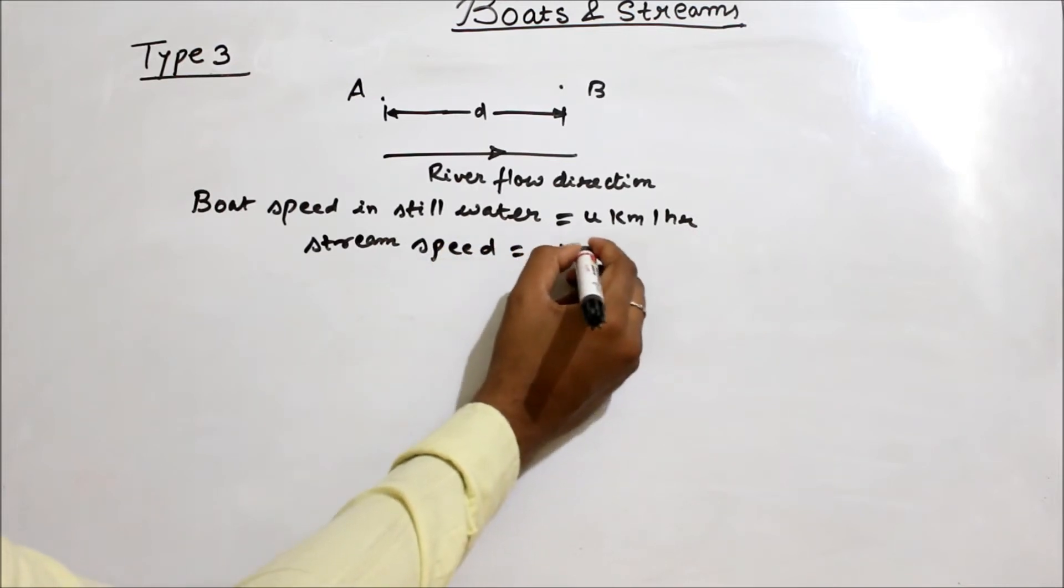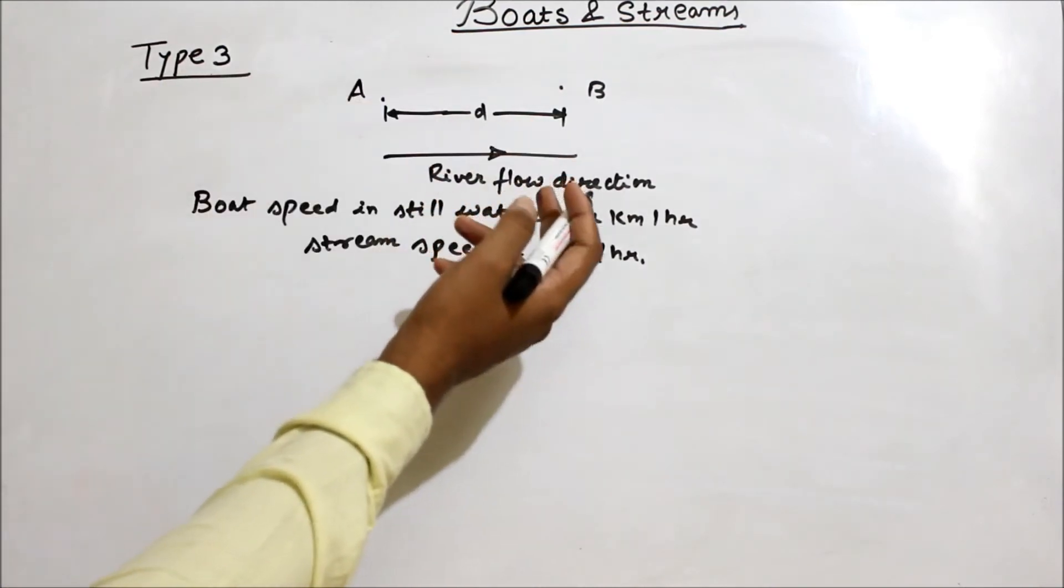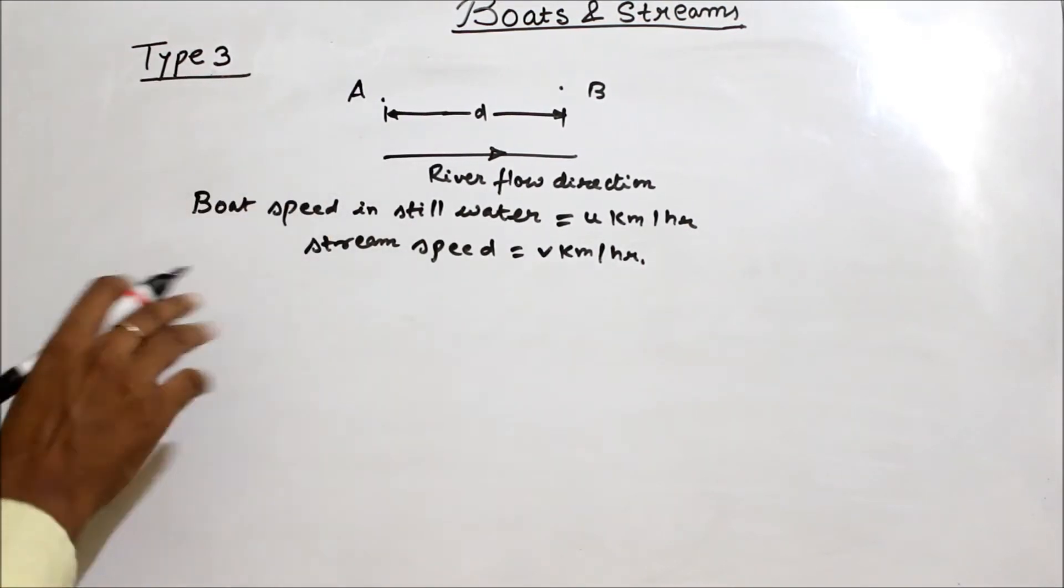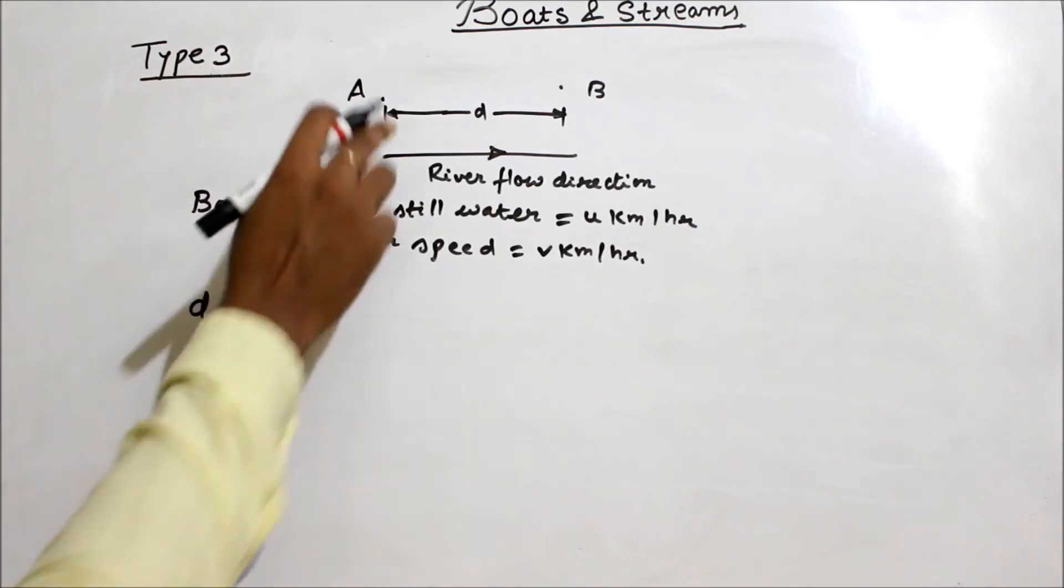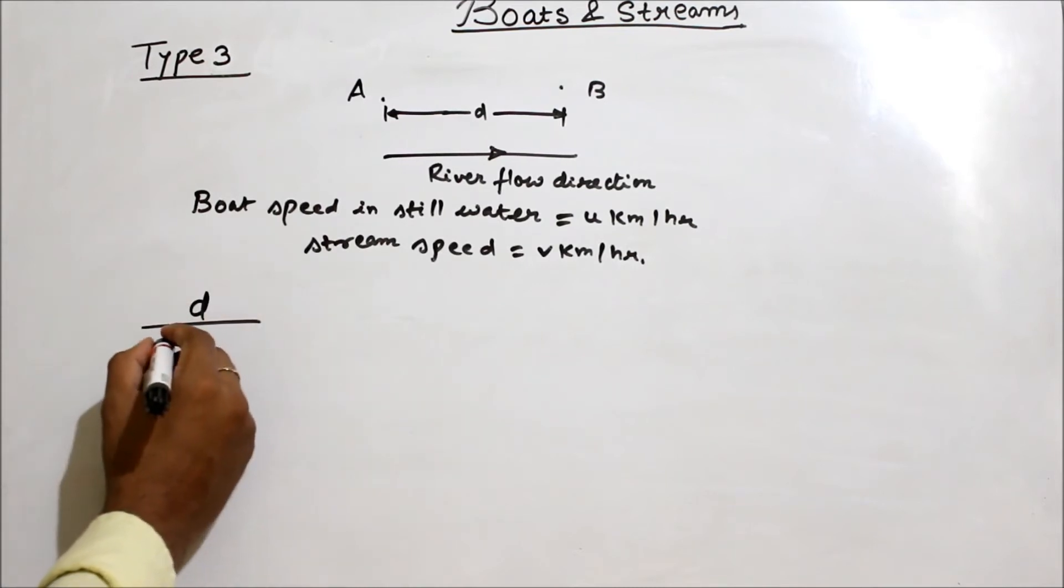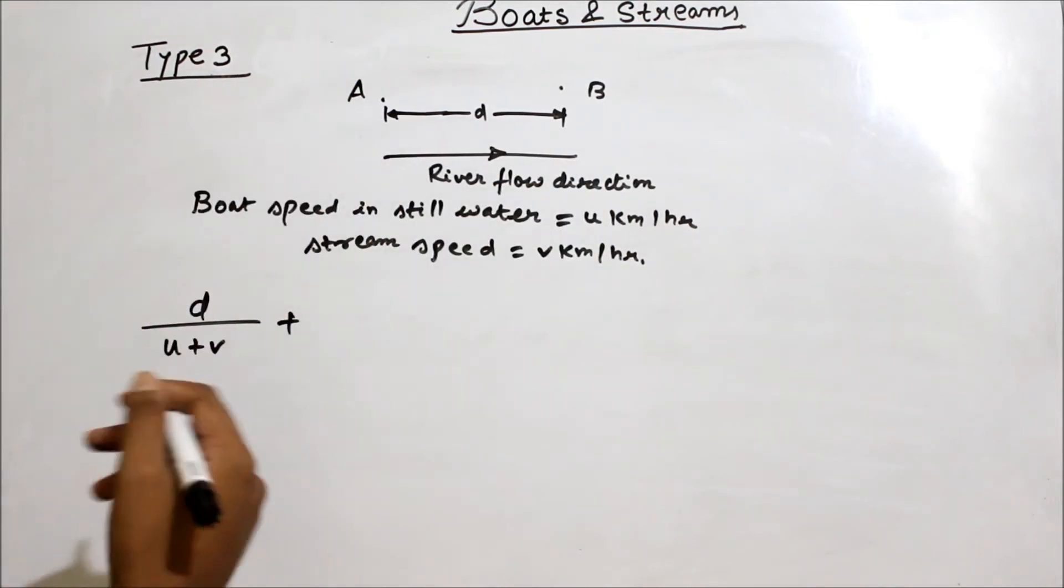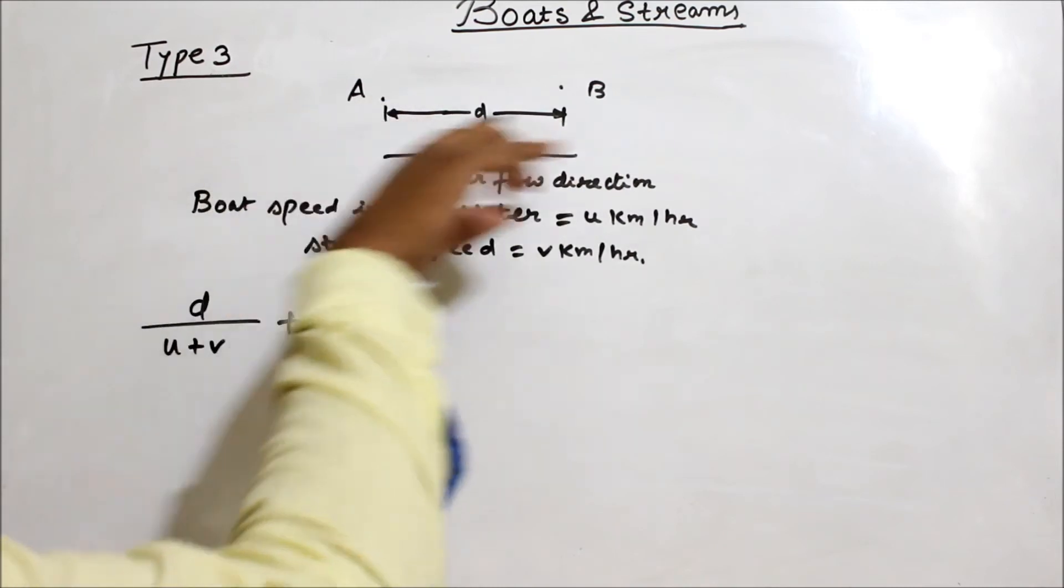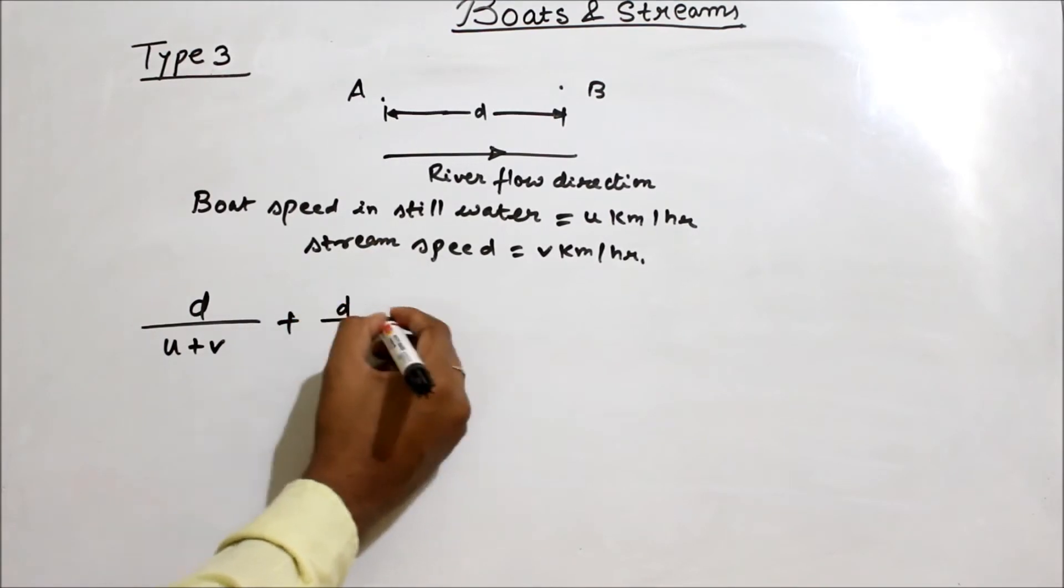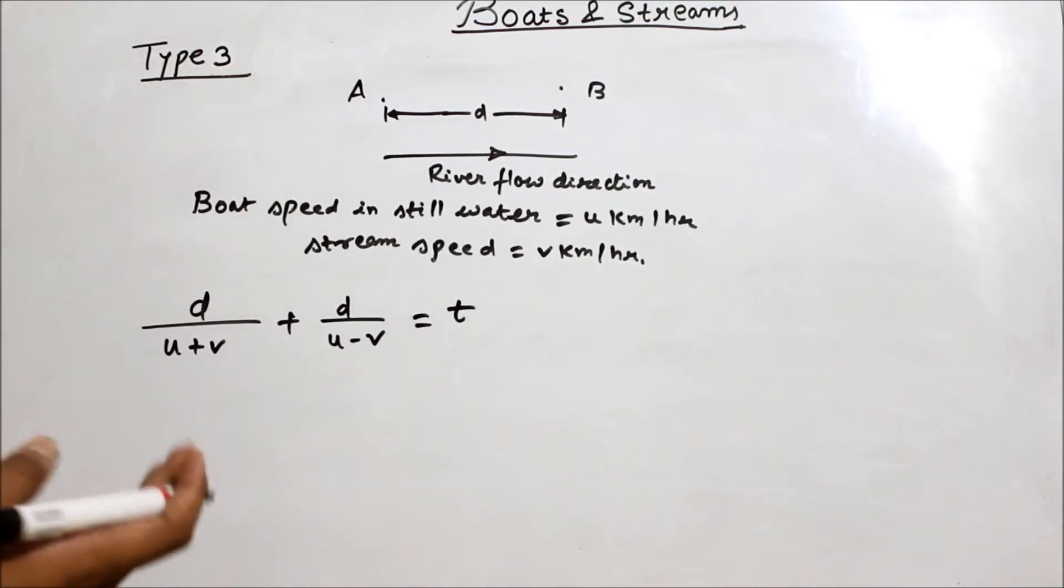Similarly, stream speed - what is going on? So the speed of boat in still water is u, stream speed is v, and the total time is t hours. So we can see A to B, that means downstream going down. How much time it will take? Total distance d divided by downstream speed, what is it? U plus V. Plus B to A, that means upstream. River protection is there. Upstream speed is u minus v. This is equal to T.